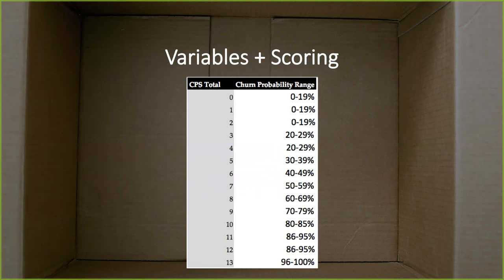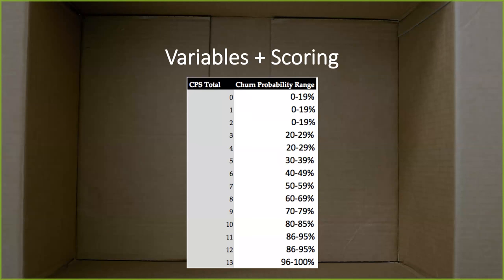Before we go to the next example, Flavio asked: how would you compare a churn probability score to a customer happiness score? Are they simply opposite, or not exactly? Is there a sense in using both?